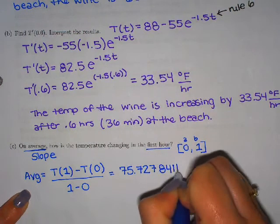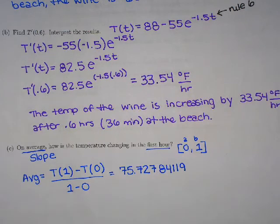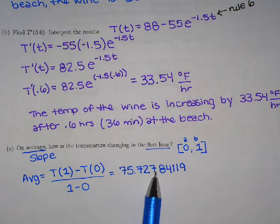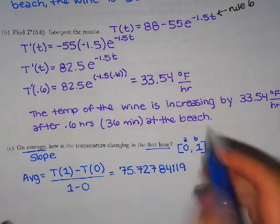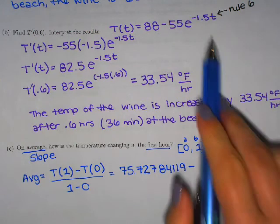In real life, I would totally give you full credit just for being close. But WebAssign is very picky. So write down as many numbers as you can because you cannot round to your final answer. So we have 75.72778411119.